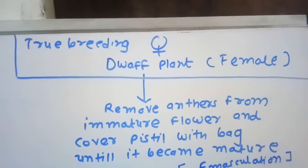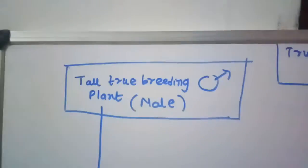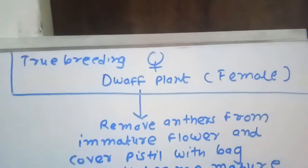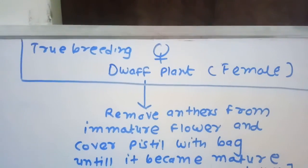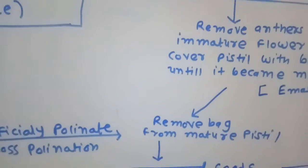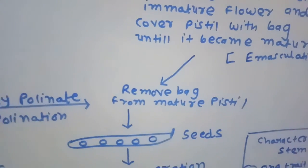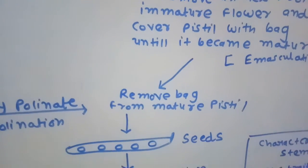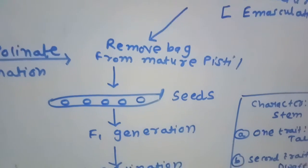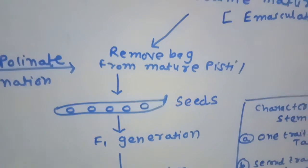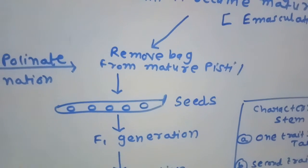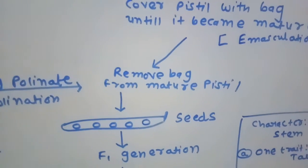By doing this, he crossed the true breeding tall plant with the true breeding dwarf plant. After fertilization, whatever seeds were obtained were sown, and he got the first generation — that is, the F1 generation, also called the first filial generation or first progeny generation.